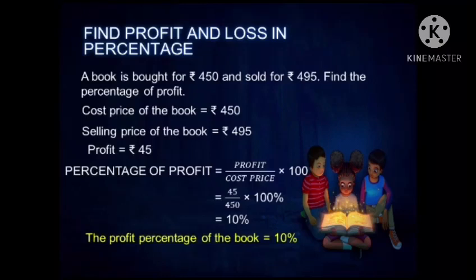Let's do a recall. A book is bought for rupees 4.50 and sold for 4.95. We know the cost price and selling price, so we find the profit. Then we apply the formula: profit divided by cost price into 100. That is 45 divided by 450 into 100, which simplifies to 10 percentage. Therefore, the profit percentage of the book is 10%.